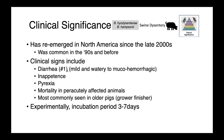Moving on to Brachyspira and the agents of swine dysentery — Brachyspira hyodysenteriae and hampsoni. This is a condition which has really re-emerged since the late 2000s. Prior to that, it was quite common in the 1990s and before, but underwent this period of relative quiescence for reasons that we don't fully understand.